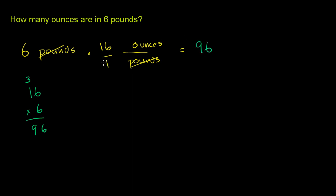You have this divided by 1 here, but that's not going to change anything, and then all we're left with in the dimensions are the ounces. So 6 pounds are 96 ounces.